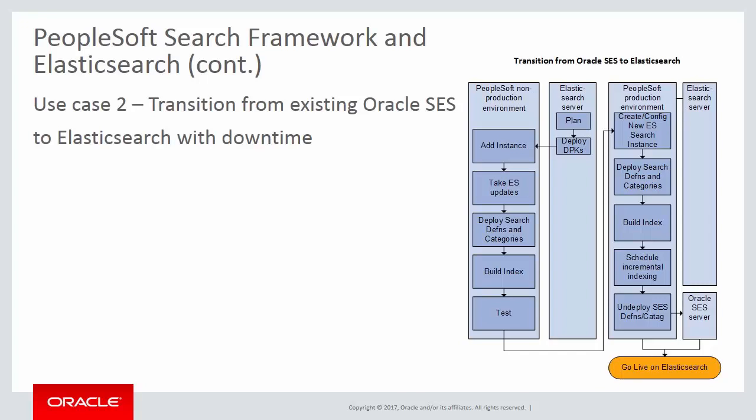The PeopleSoft application must be on PeopleTools 8.55.11 or higher. The production environment uses Oracle SES as the search engine. You will create a non-production environment with Elasticsearch for acceptance testing, using a non-production Elasticsearch server. You will then schedule downtime to decommission the production Oracle SES environment and begin using Elasticsearch. This use case is described in detail in the PeopleSoft Spotlight Series Moving from SES to Elasticsearch, or doc ID 2205540.2 on My Oracle Support.